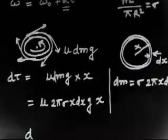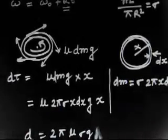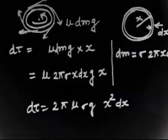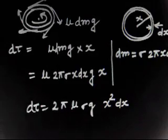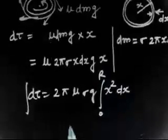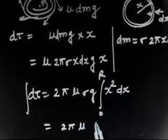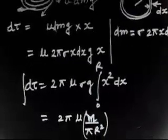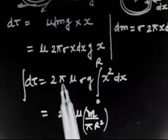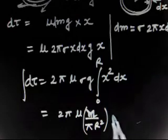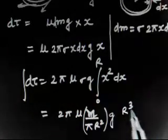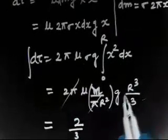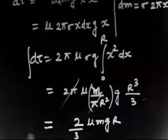d-tau is not constant — it is a function of x. As x increases, the torque increases. So I integrate from 0 to r to get the total torque: tau = 2·pi·mu·sigma·g · integral of x²dx from 0 to r = 2·pi·mu·sigma·g·(r³/3). Substituting sigma = m/(pi·r²), the pi cancels and r² cancels with r³, giving total torque tau = (2/3)·mu·m·g·r.